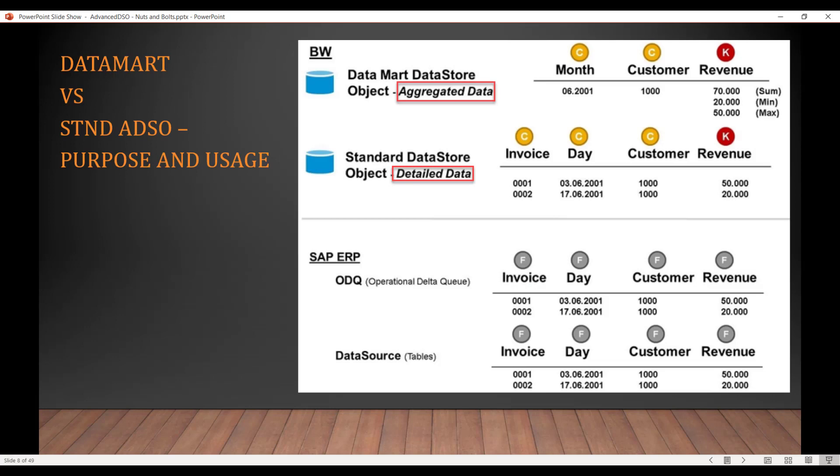What is the difference between DataMart and the Advanced DSO of Standard type? DataMart is basically aggregated, and Standard is detailed. Staging is, of course, 1-to-1—mostly it is 1-to-1 from the source. From there we go into Standard ADSO, which is still detailed, not as detailed as Staging but still detailed.